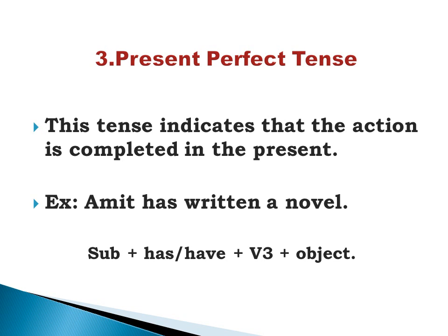Present perfect tense — the very title indicates the meaning. This tense indicates that the action is completed in the present. Example: Amit has written a novel. The action of writing is completed in the present. Formula: subject + have/has (depending on the person of the subject) + V3 + object. Every perfect tense — whether present perfect, past perfect, or future perfect — always makes use of the past participle form of the verb.